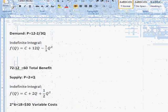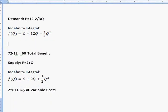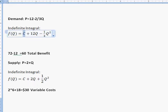If we plug in 6 for 12 times 6 minus one-third times 6 squared, we get 72 minus 12 equals 60, which is the total benefit. You might be wondering, what happened to that C, that unknown constant? Let me tell you.